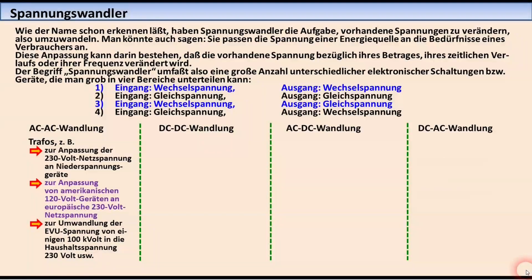Zur ersten Gruppe gehören alle Geräte, die aus einer Wechselspannung am Eingang wieder eine Wechselspannung am Ausgang machen, also alle Transformatoren. Es wird nur die Amplitude der Wechselspannung beeinflusst, und zwar entweder heraufgesetzt oder herabgesetzt, je nachdem, ob die Primärwicklung eine höhere Windungszahl hat als die Sekundärwicklung oder eine kleinere.